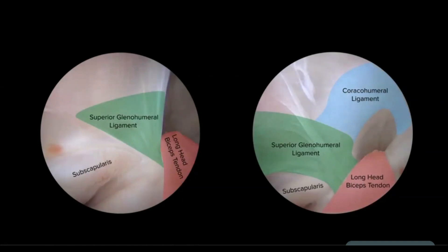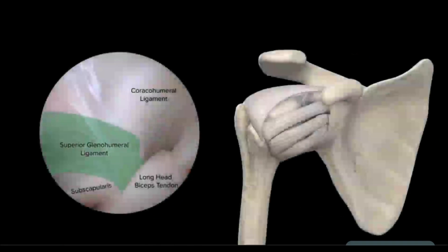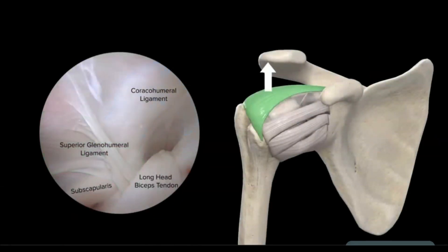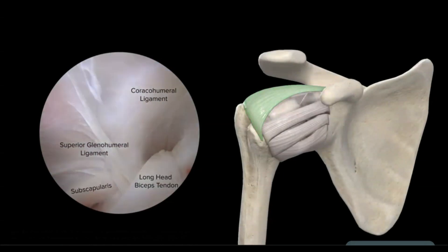The CHL acts as a superficial roof, while the SGHL is the deep floor of the pulley. The SGHL works in conjunction with the CHL to limit superior translation and external rotation when the arm is adducted.